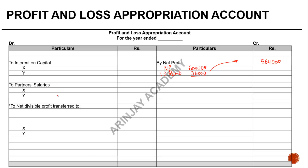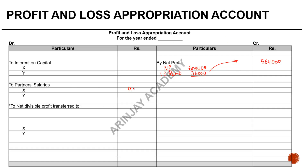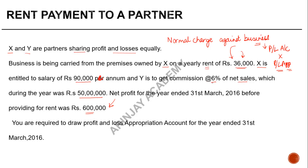Now let us look at the other adjustments. X is entitled to a salary of 90,000, so partner salary for X is 90,000. Y is to get a commission of 6% of net sales, which during the year were 50 lakh. Note that since Y is a partner, his commission for services is taken to the profit and loss appropriation account. If instead of Y this were a sales manager, it would be charged against the profit and loss account itself. So 6% of 50 lakh is 3 lakh, and Y gets a commission of 3 lakh.